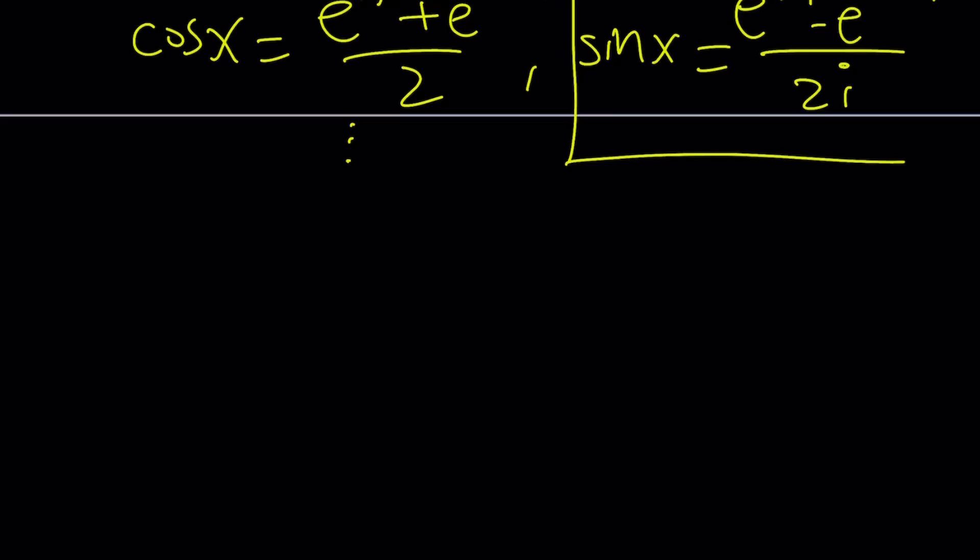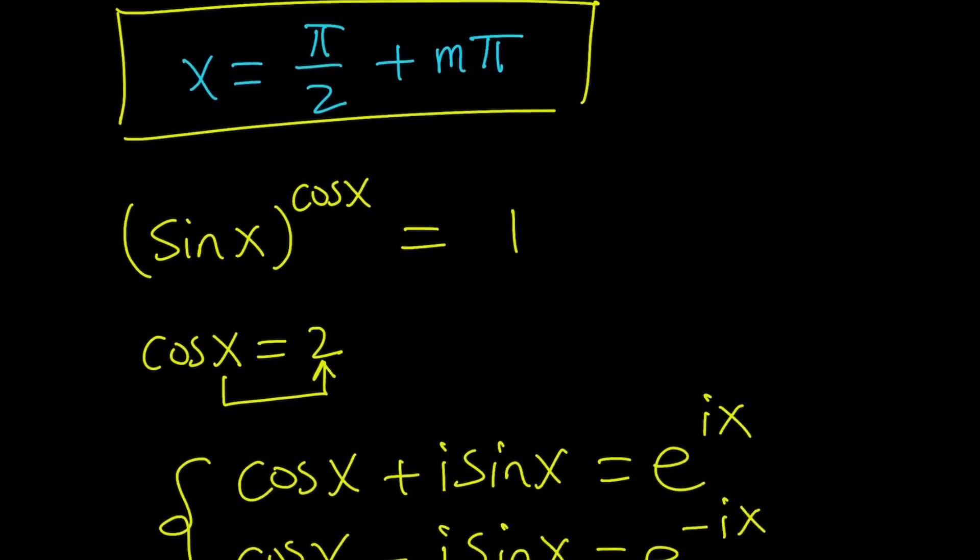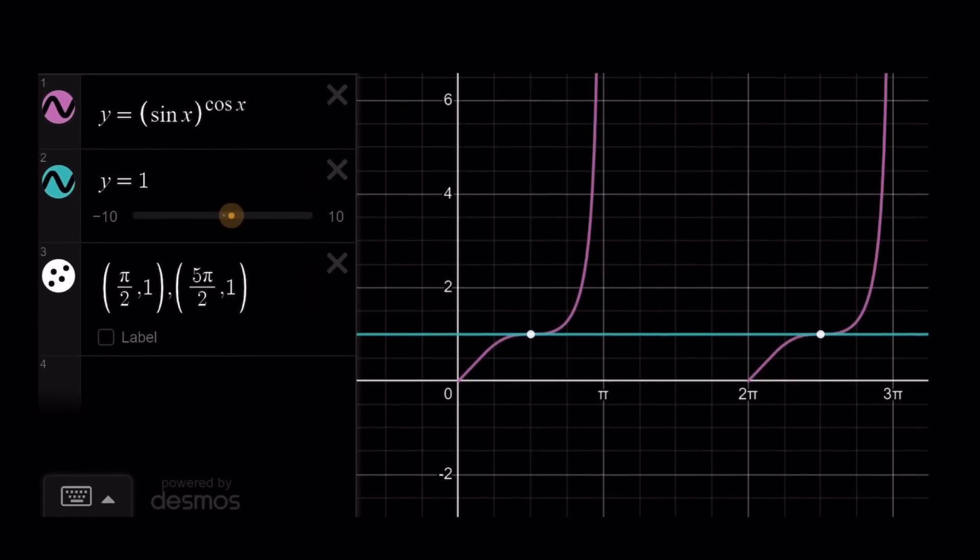Now, remember, our solutions were pi over 2 plus multiples of pi. But when you look at the graph, what do you notice? We don't have 3 pi over 2. We only have pi over 2, and then it jumps to 5 pi over 2. Why? Do you know why? Because exponential function doesn't want the base to be negative. Because when the base is negative, everything goes crazy. That's why those are skipped, but guess what? Those are actually solutions. So, x can be 3 pi over 2. The base can be negative because negative 1 to the power 0 is, believe it or not, is also 1.